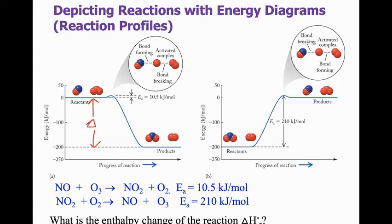Because it's really that delta H is just this distance right here between reactants and product. That's our value of delta H. So 210 subtract 10.5, we get 199.5 kilojoules per mole is the enthalpy change. So if we're going from reactants to products, that's going to be a negative 199.5 kilojoules per mole in that direction.